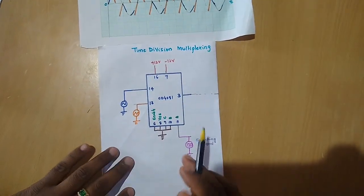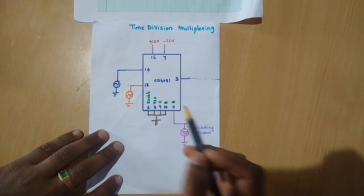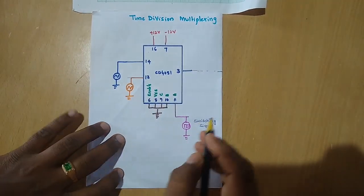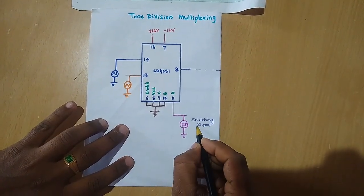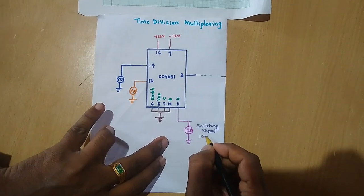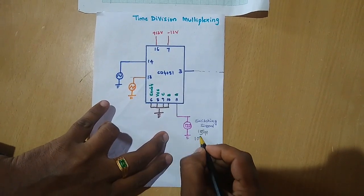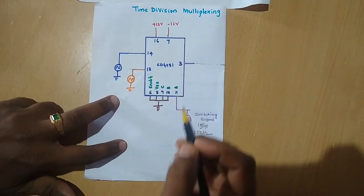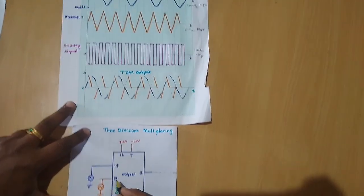To demonstrate TDM, we are using IC CD4051, which is an analog multiplexer or demultiplexer. As discussed earlier, pin numbers 6, 8, 9, and 10 must be grounded. Pin number 11, which is selection input line A, should be connected to the switching signal — 15 V peak-to-peak, 10 kHz square wave — at pin number 11. The two message signals — band-limited low-frequency signals, message 1 and message 2 — must be connected to pin numbers 14 and 13 respectively.